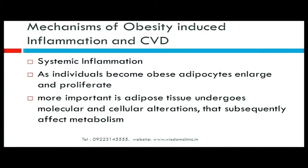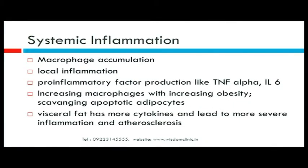The mechanisms of obesity-induced inflammation: basically, obesity produces systemic inflammation — either low-grade or severe-grade. As individuals become obese, adipocytes enlarge and proliferate; this is not a healthy enlargement. Adipose tissue undergoes molecular and cellular alterations leading to metabolic disturbance. In adipocytes there is macrophage accumulation, local inflammation, and pro-inflammatory factors such as TNF-alpha and IL-6. Increasing macrophages scavenge apoptotic adipocytes, and visceral fat has more cytokines, leading to more severe inflammation and atherosclerosis.